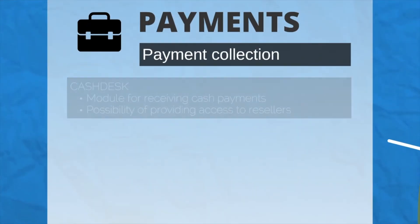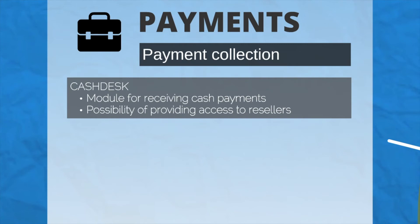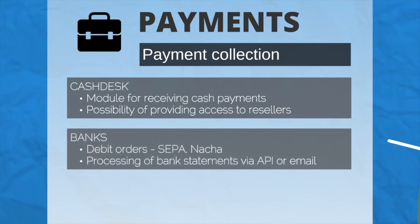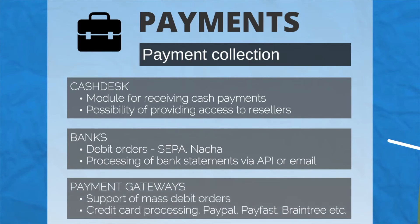When Splings charges customers it can also process payments. Payments can be done via a cash desk for receiving cash payments, via banks through processing of bank statements via API or email, sending of debit orders, or via payment gateways like PayPal, Payfast, credit card processing, or mass debit orders.